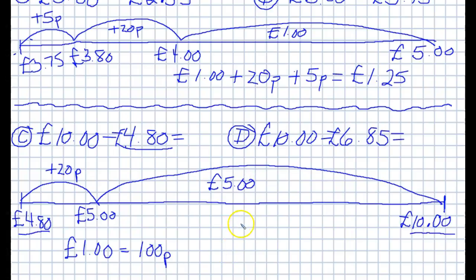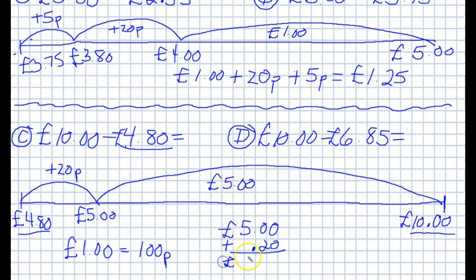So our answer is going to be five pounds plus twenty pence, which is five pounds twenty. This is basically the same way of doing it as before. The only difference is that I left the p's in there, but you can write it as a decimal number — whichever is easier for you.